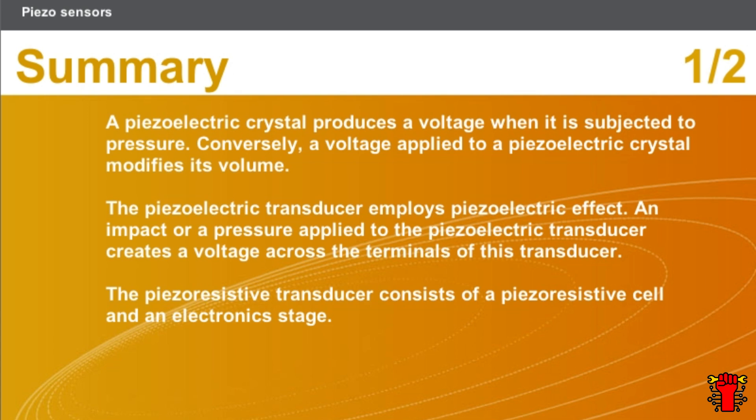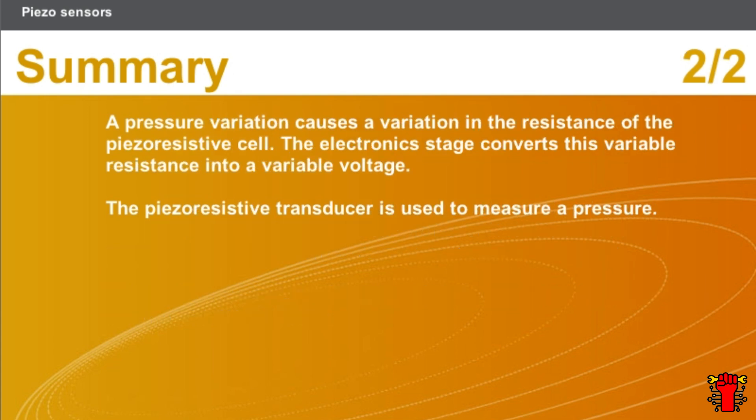In this chapter, we covered the following points: a piezoelectric crystal produces a voltage when it is subjected to pressure, and conversely, a voltage applied to a piezoelectric crystal modifies its volume. The piezoelectric transducer employs the piezoelectric effect — an impact or pressure applied to it creates a voltage across its terminals. The piezoresistive transducer consists of a piezoresistive cell and an electronic stage. A pressure variation causes a variation in the resistance of the piezoresistive cell, and the electronic stage converts this variable resistance into a variable voltage. The piezoresistive transducer is used to measure a pressure.